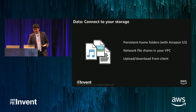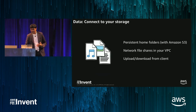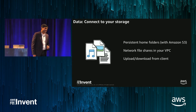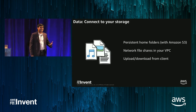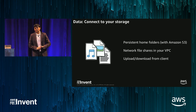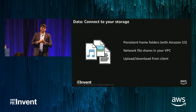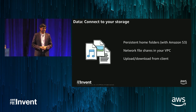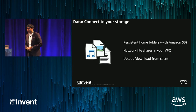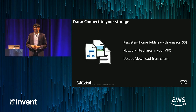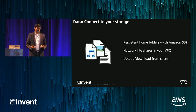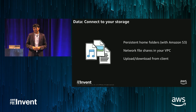With data, there are multiple options. You can use persistent home folders that we provide built-in, but the data is synced to S3 in your AWS account. You can also use network file shares like the one I just demoed, or you can upload and download from your client. If you don't want users to have any persistent data, you can just have them upload and download files directly.